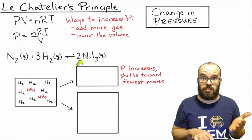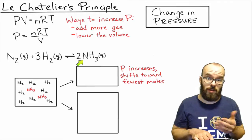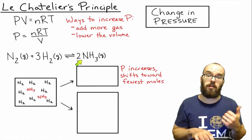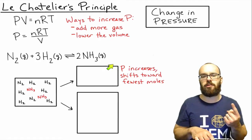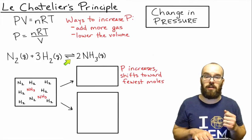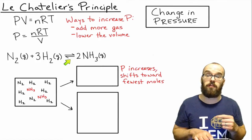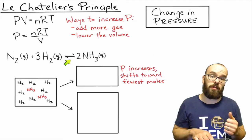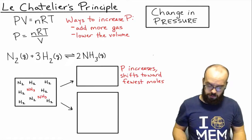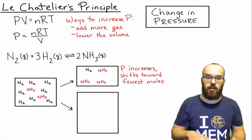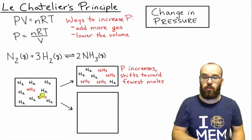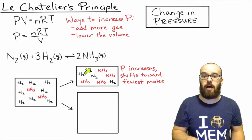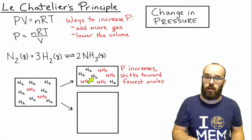So where is there the fewest number of moles stoichiometrically? That's going to be on the right side — our products. So if we increase the pressure, that'll shift our reaction, in this case, toward the fewer number of moles, which is on the product side. So this is what we would get — we now have more ammonia than we did before. I've got four instead of two, and then I have fewer hydrogen and nitrogen molecules.